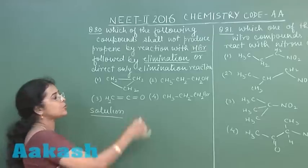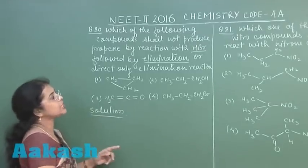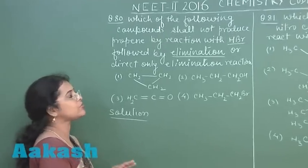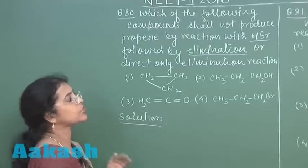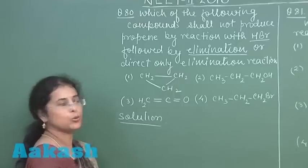Second option is given alcohol. This is primary alcohol. If treated with HBr it will give CH3-CH2-CH2Br which upon further elimination will produce propane.